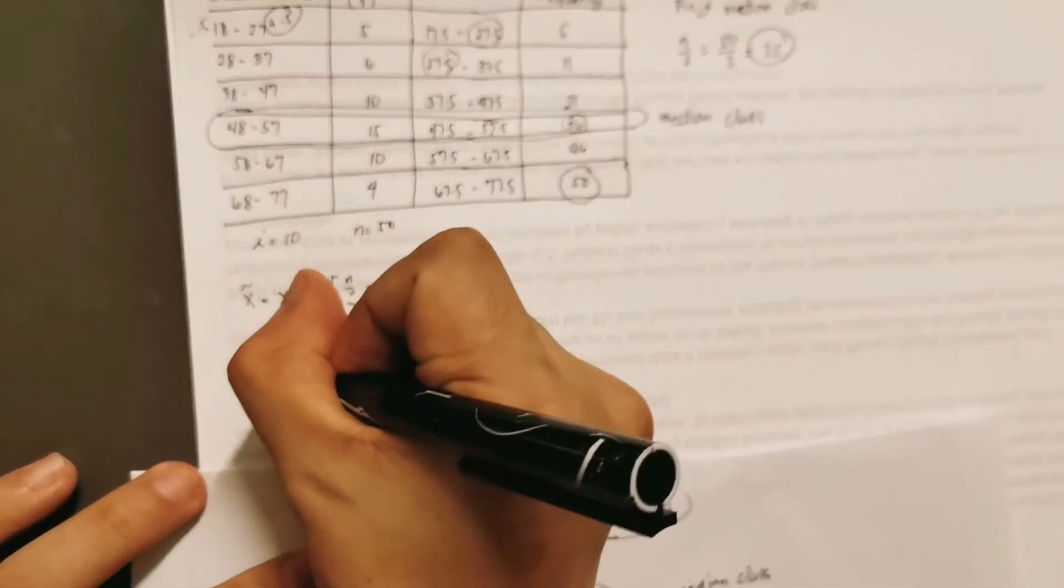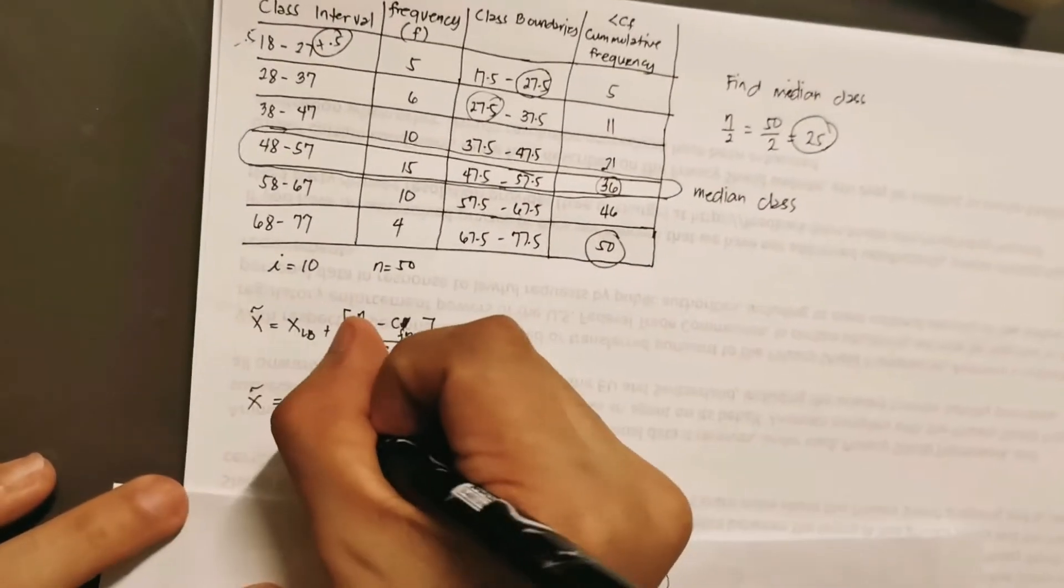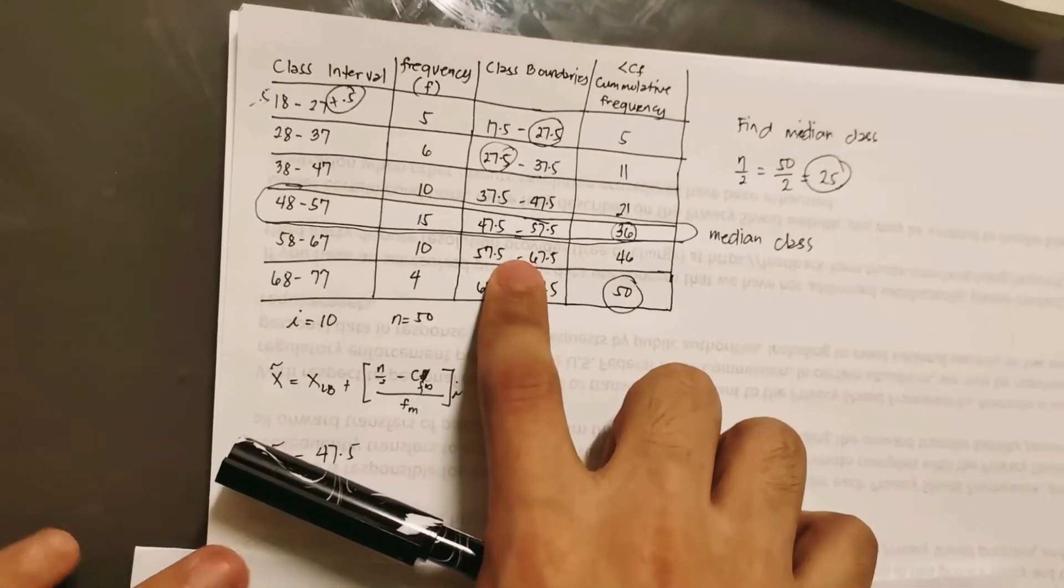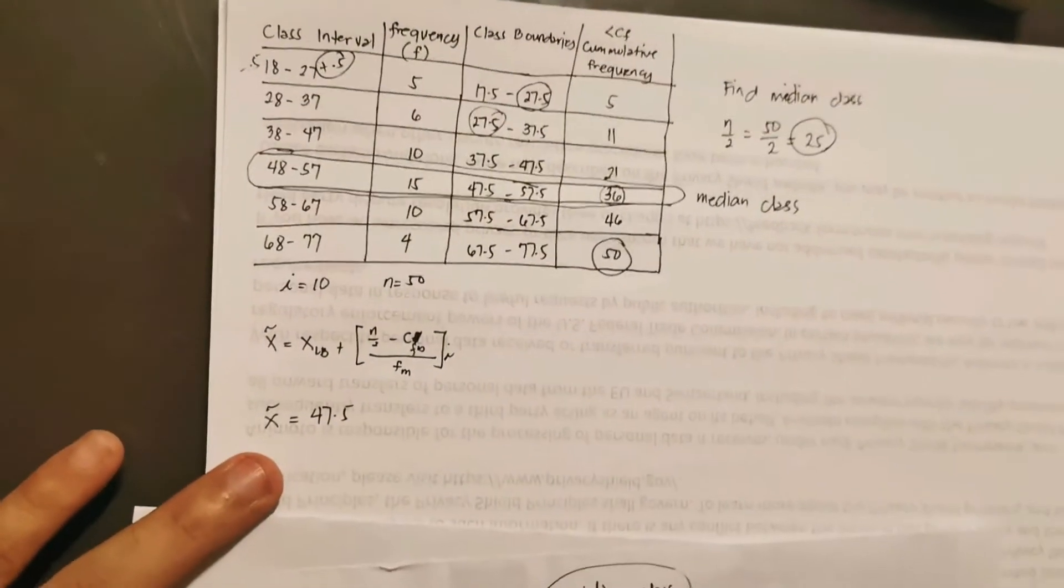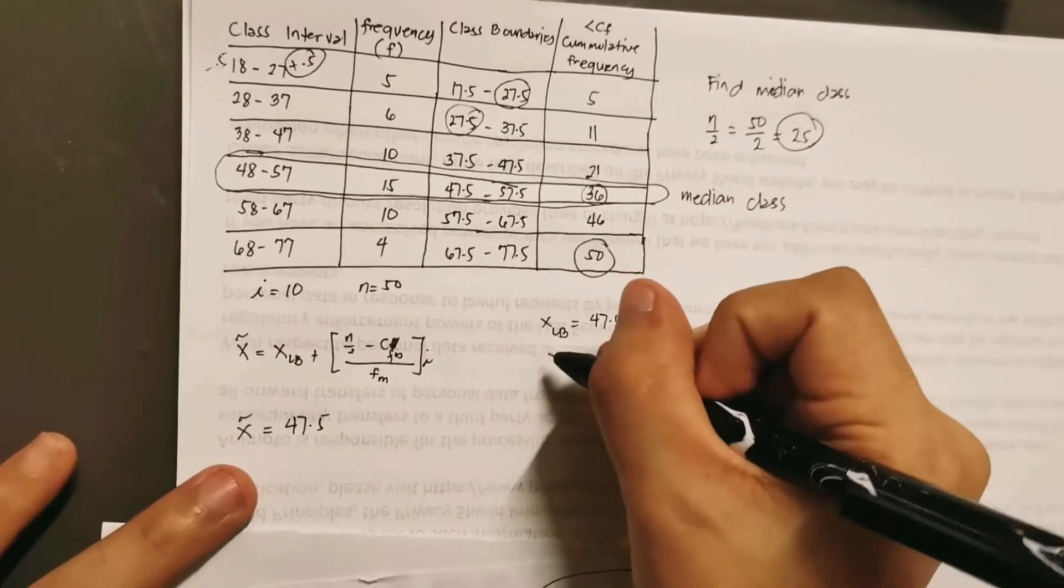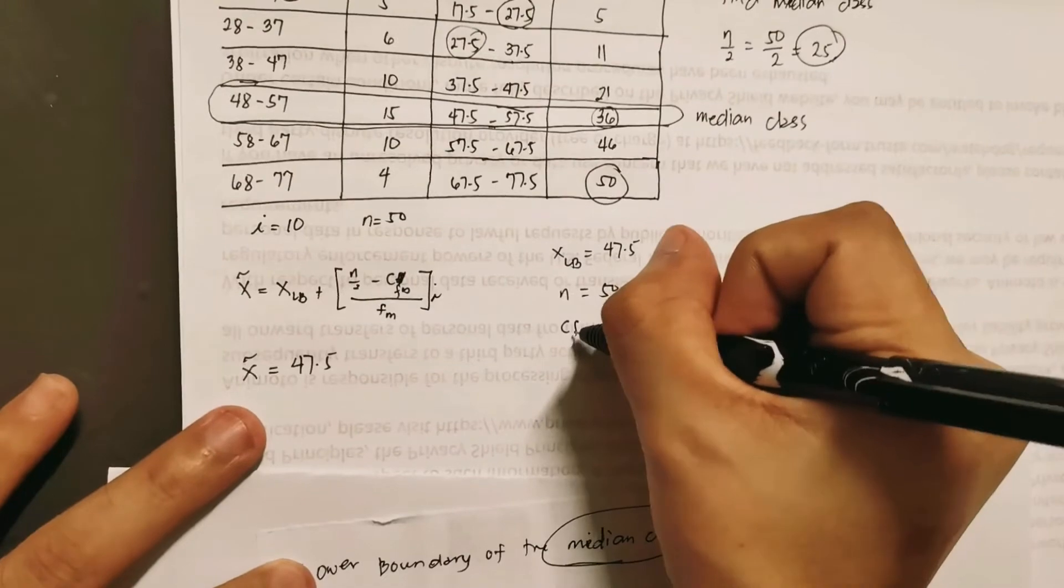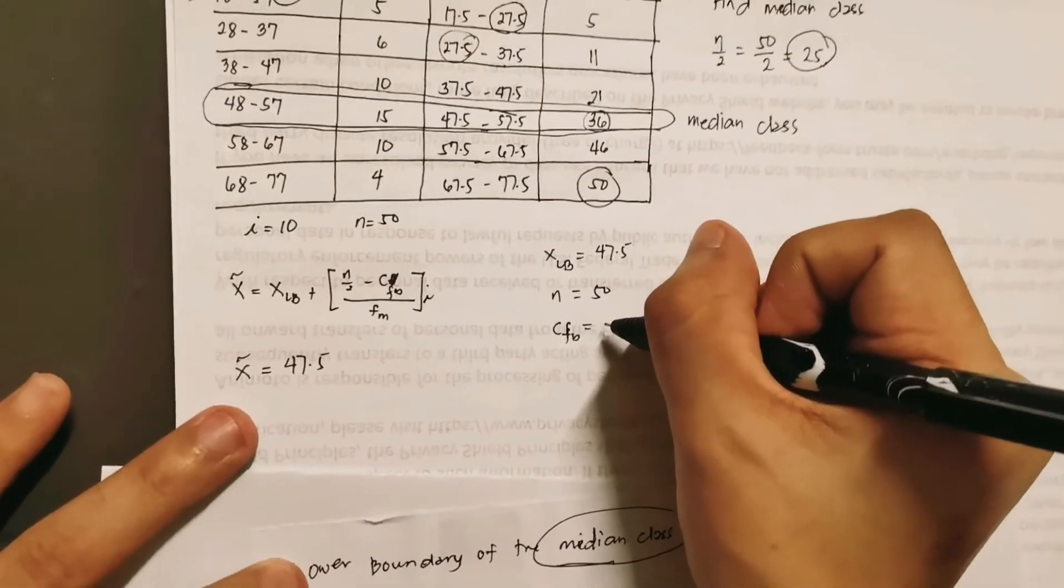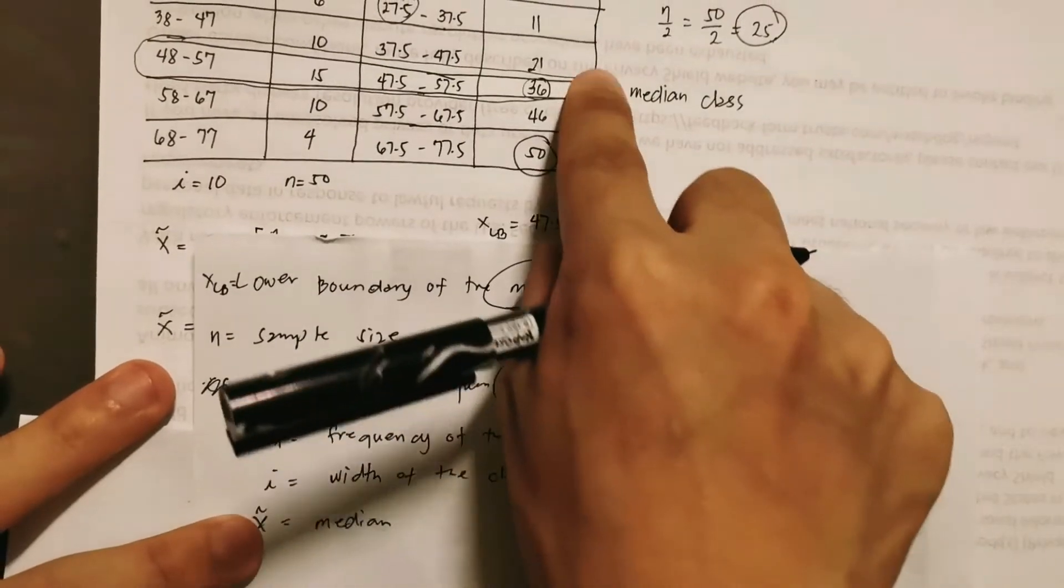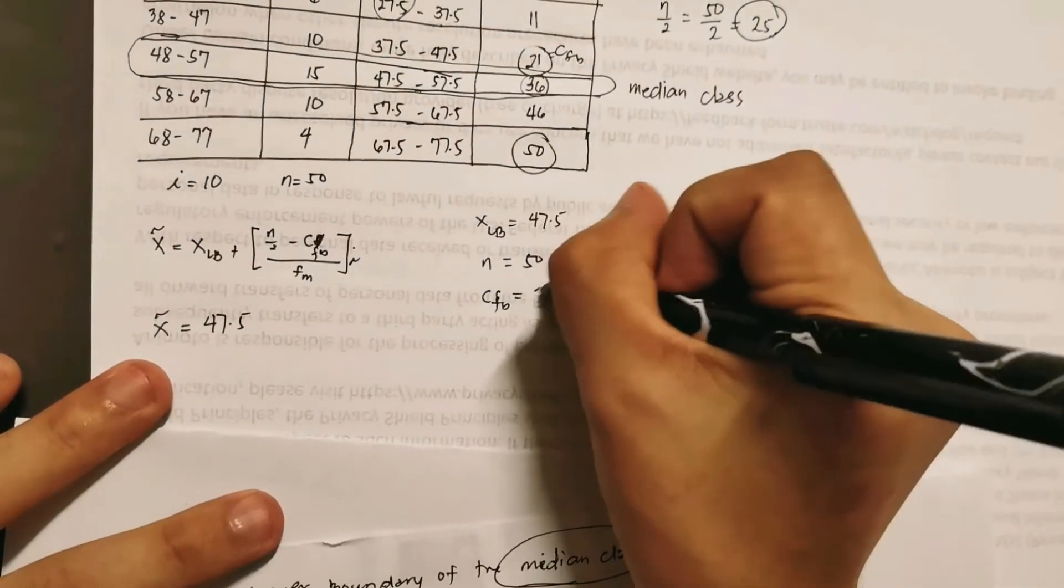Let's start from here. So you have, okay, x tilde. Our lower boundary, what's the lower boundary of this highlighted row? We have 47.5. Okay, that is our lower boundary. x sub LB. And then, after which, oh, I'd rather, let's identify it here so that it's a lot easier to do it. x sub LB is 47.5. And then our next, we have N is 50. Of course, CF sub B is, oh, CF sub B is the cumulative frequency before the median class. This is the median class, the highlighted one. Before this, the cumulative frequency is 21. So that is CF sub B. So we have 21.